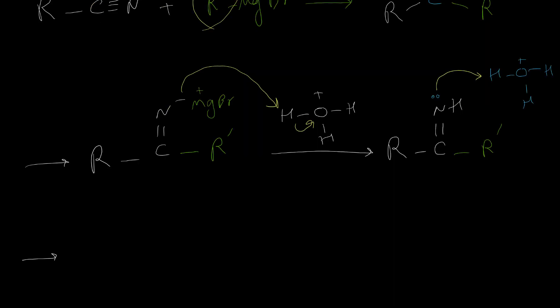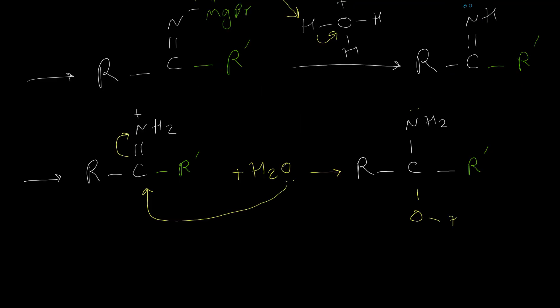So this nitrogen can take one hydrogen from hydronium ion and convert to NH2 positive plus water. So right now, this water molecule can attack to this positive carbon and push this pi bond to the nitrogen and convert to this intermediate.